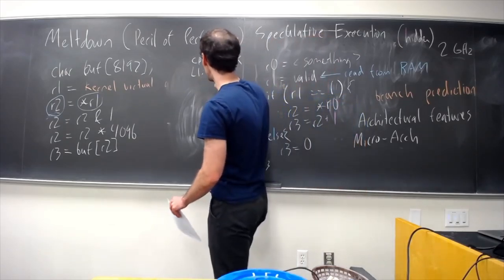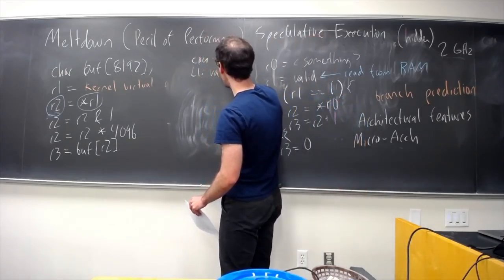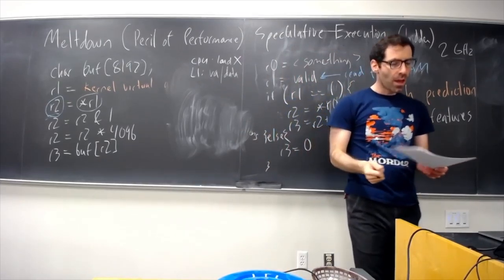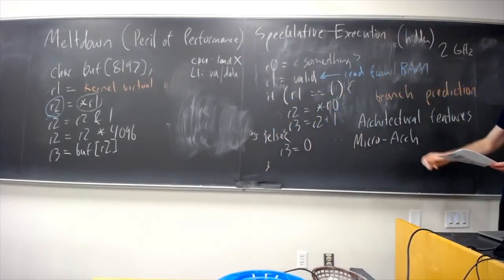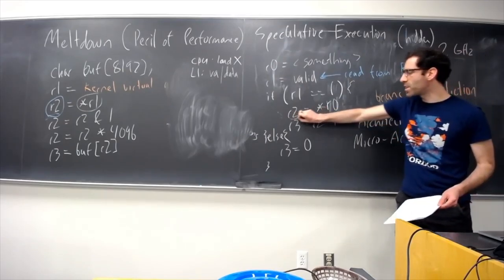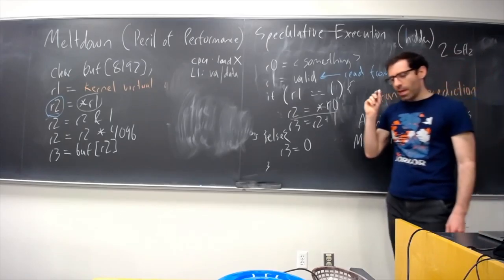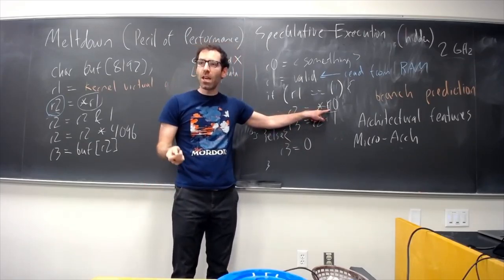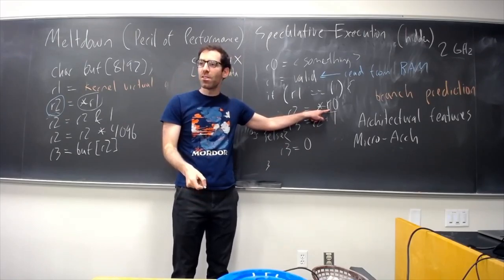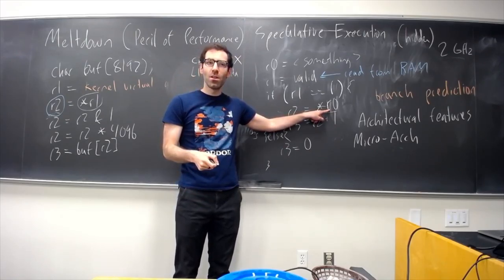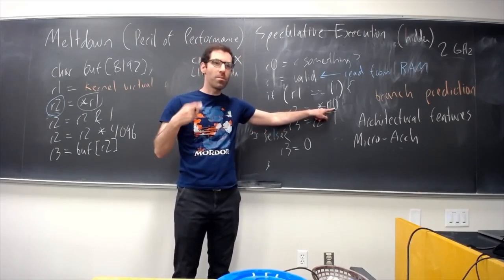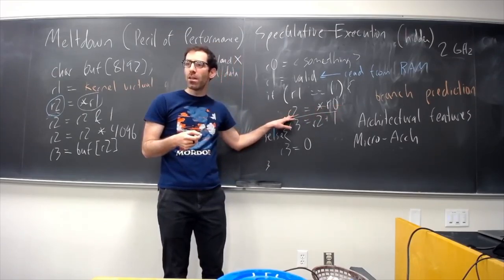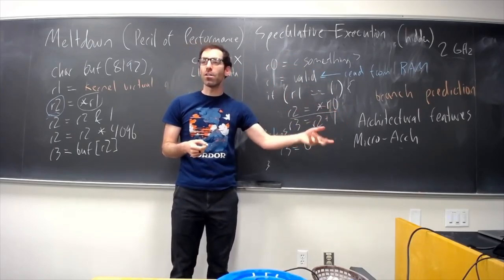Yeah, so our L1 cache has something like a virtual address, and the data that we're looking for. And one important thing that I forgot to mention about the speculative execution, is that in Intel chips, this memory access, when executed speculatively, did not check the permissions of that memory address. So, if the address R0 was something that should not be allowed to read, it read it into R2 anyway. And then at the time this instruction was retired, that is when the permissions were checked.